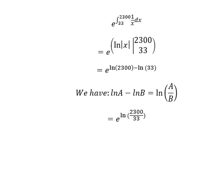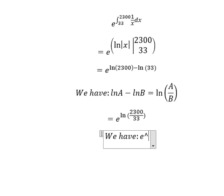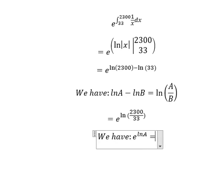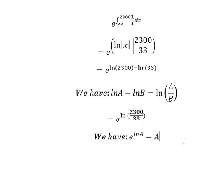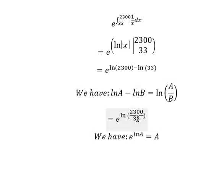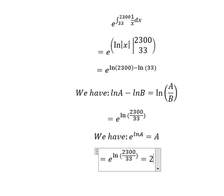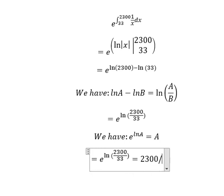Next, we have the second formula: e to the power of ln of A equals A. So this one equals 2300 over 33.